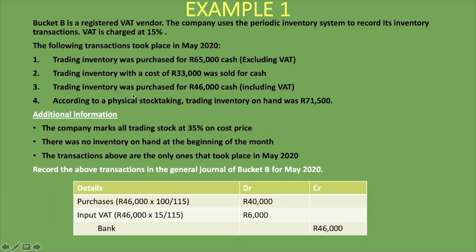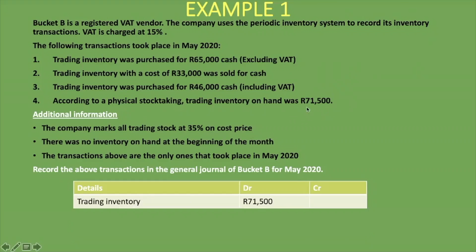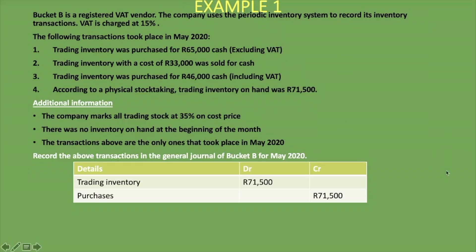Transaction four: according to a physical stocktake, trading inventory on hand is R71,500. At the end of the period using the periodic inventory system, we now record the inventory on hand. First journal entry: debit Trading Inventory R71,500 (this is the closing inventory now on hand), and credit Purchases R71,500. This reduces and removes the Purchases account. In the periodic system, this is the first time we debit Trading Inventory.